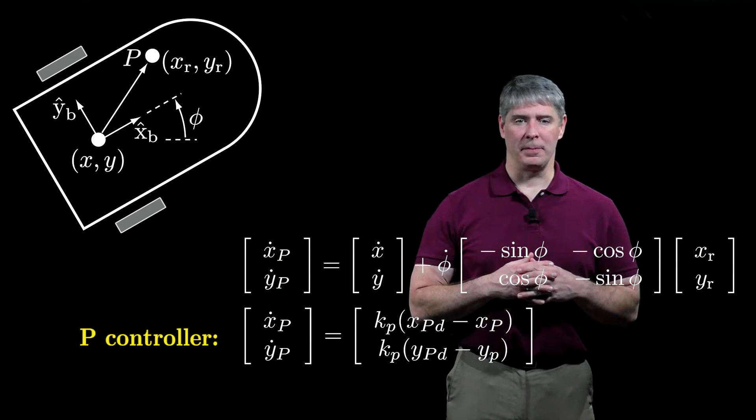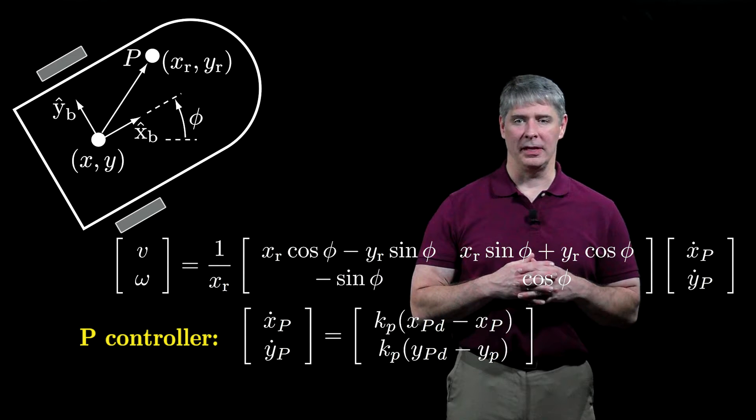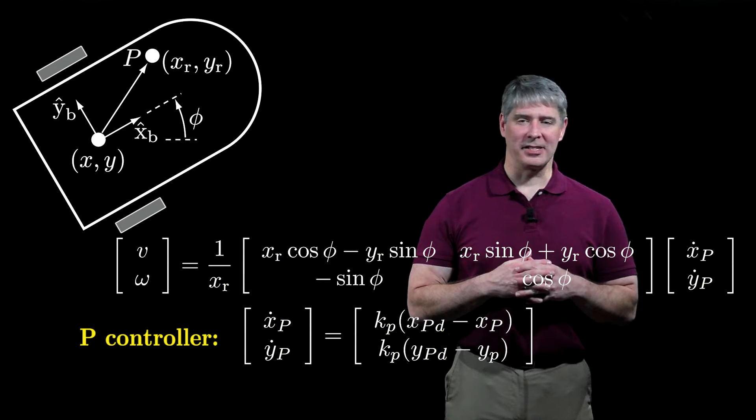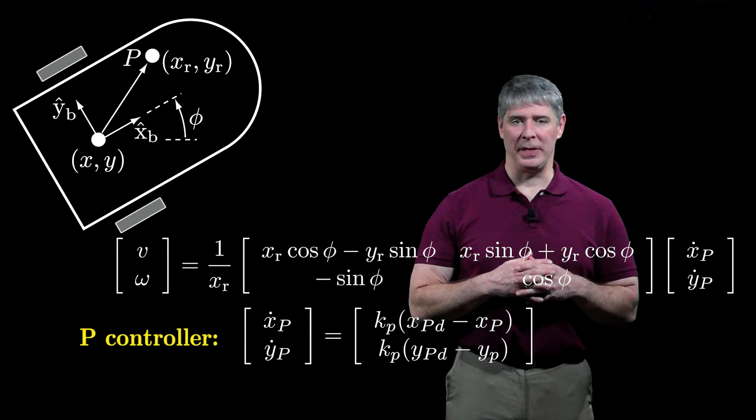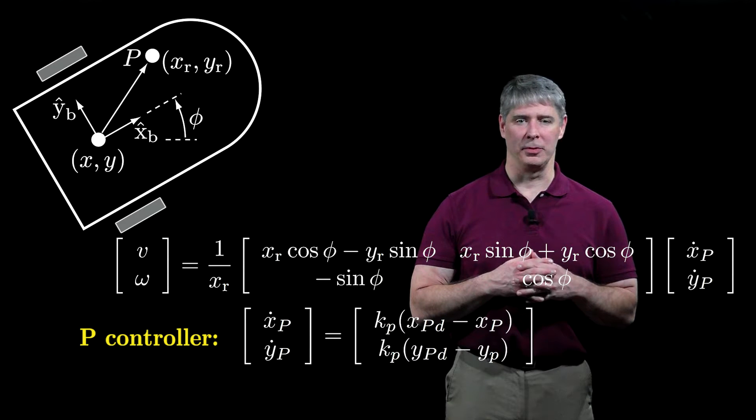The commanded velocity of the point, xp dot, yp dot, can be converted to the linear velocity v and the angular velocity omega of the chassis. Note that xr, the x-position of the point P in the body frame, must be non-zero to be able to move the point P in arbitrary linear directions.